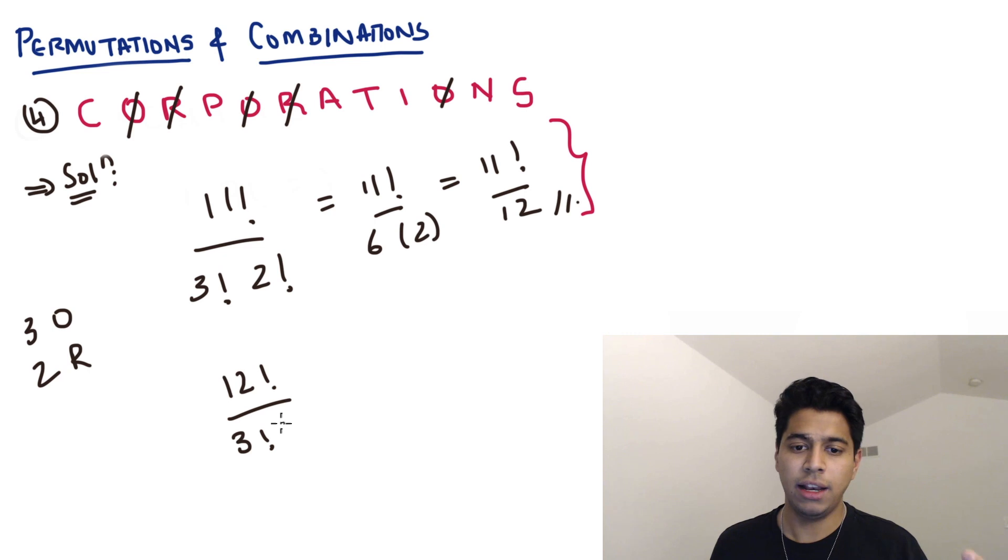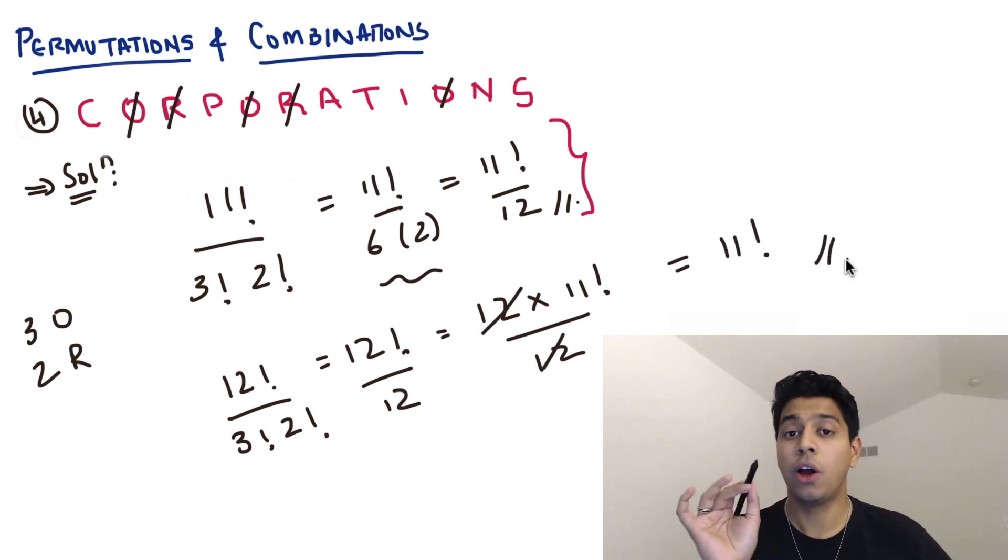Now, 12 factorial upon, if you look here, it comes up to 12, 6 into 2. Now, this could be simplified further. This is basically 12 into 11 factorial, divided by 12. So 12 and 12 can get canceled. And one of your options might just be 11 factorial. So sometimes you may have to simplify it just a little bit to try and find the answer in the options. But whenever you're solving them, always look at your options first, because sometimes you don't need to simplify it at all. They'll directly give you 12 factorial by 12. But sometimes it may just be 11 factorial.